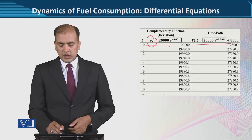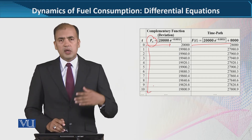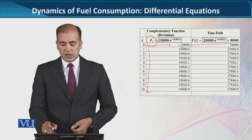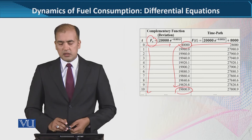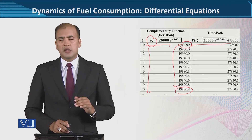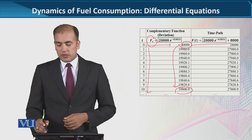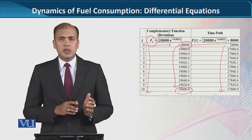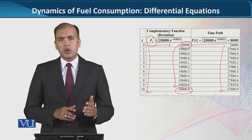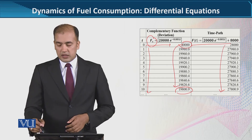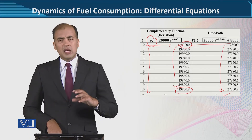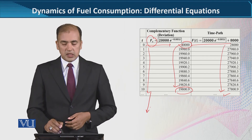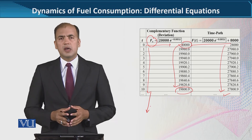When we substitute t equal to zero first, the initial condition comes in, and after applying it with the initial condition, we observe the dynamics. It was 20,000 before and now it has come to approximately 19,800. This means it is declining — the complementary function is decreasing. This movement is from a point away from equilibrium towards the equilibrium. We see the value moving from 28,000 down to 27,800.